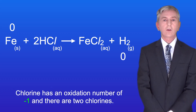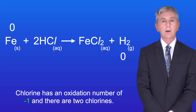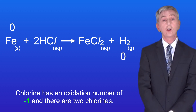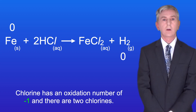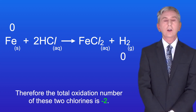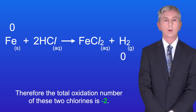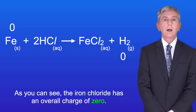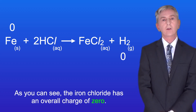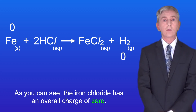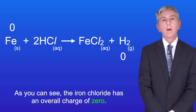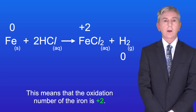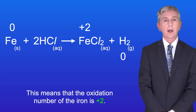Chlorine has an oxidation number of minus one and there are two chlorines. Therefore the total oxidation number of these two chlorines is minus two. As you can see the iron chloride has an overall charge of zero. This means that the oxidation number of the iron is plus two.